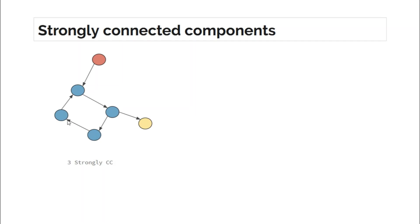If you choose these two nodes, there exists a path from this node to this node — you can directly go here using this node — and also from this node back to this node. So if you choose any two from these four nodes, there exists a path from A to B and B to A. But that is not true for this node; it cannot be part of this connected component. If you choose any two nodes including this one, there exists a path one way but not the other, and hence it has to be in a separate connected component.